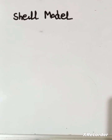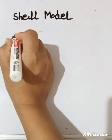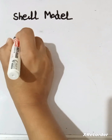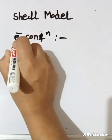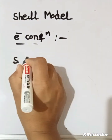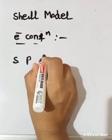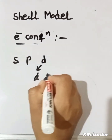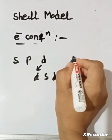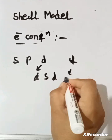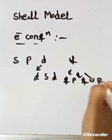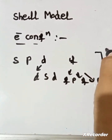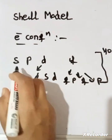Hello everyone, welcome to Flexure. Today we are going to discuss the shell model. First, we discuss the electronic configuration for nucleons. The configuration order for filling is: S, P, D, then F. For F, it is first F then P, then F again, then P. This contributes 40 number of nucleons.